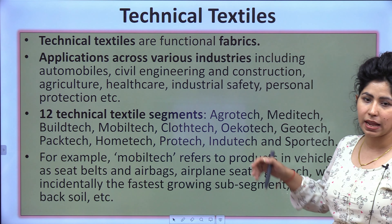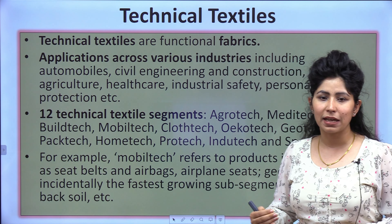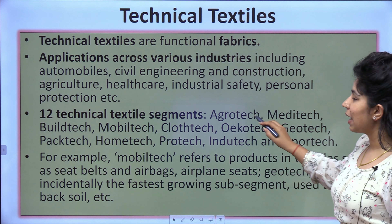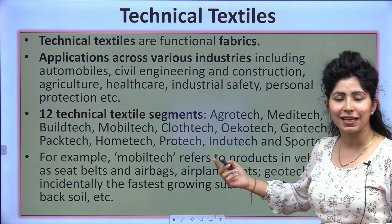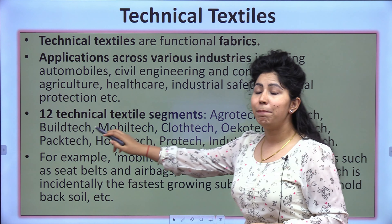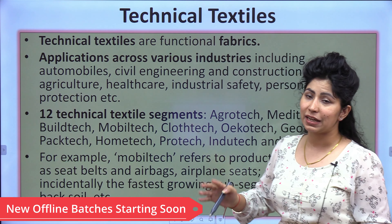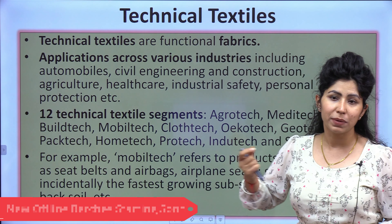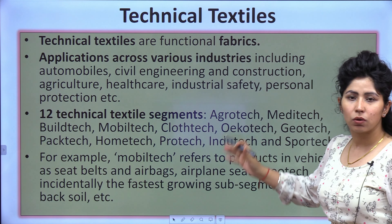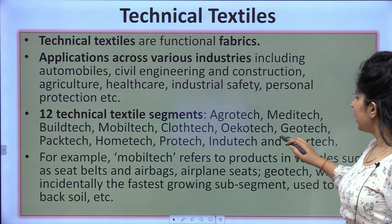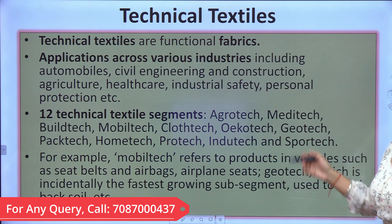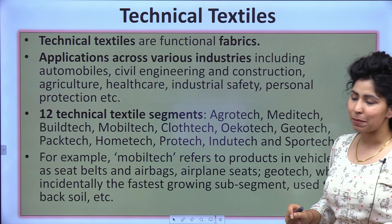We will look at an image on the next slide. Twelve technical textile segments have been identified: Agrotech — used in agriculture; Meditech — used in the medical industry; Buildtech — used in construction; Mobitech — used in automobiles; Clothtech — for clothing and garments; Ecotech, Geotech, Packtech, Hometech, Protech, Indutech, and Sporttech.